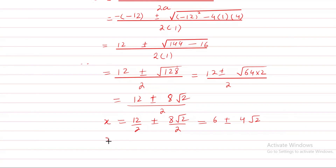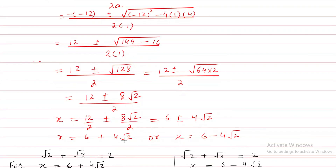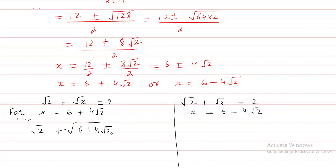So the two solutions are X equal to 6 plus 4 square root 2, or X equal to 6 minus 4 square root 2. We verify both values by substituting into the original equation K root 2 plus K root X equal to 2, checking whether the left-hand side equals the right-hand side. We first take the value X equal to 6 plus 4 square root 2 and substitute it into the equation: square root 2 plus square root of 6 plus 4 square root 2.